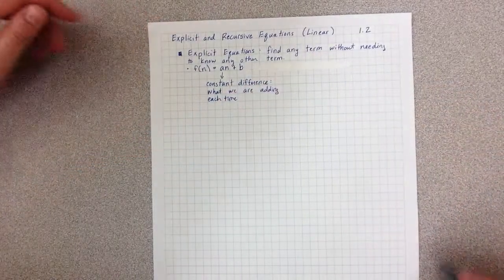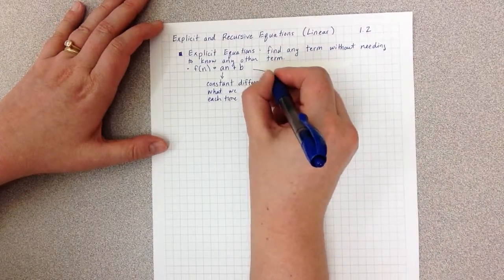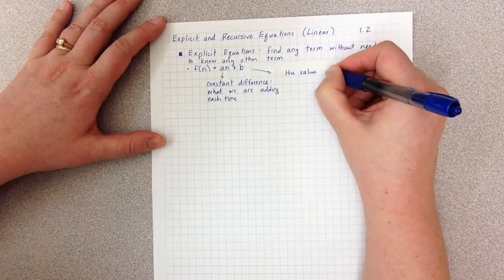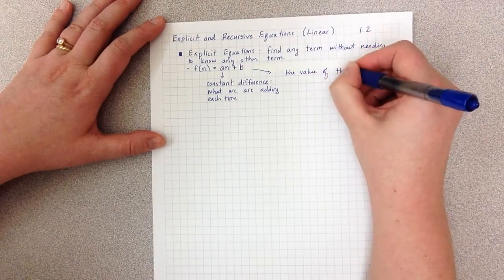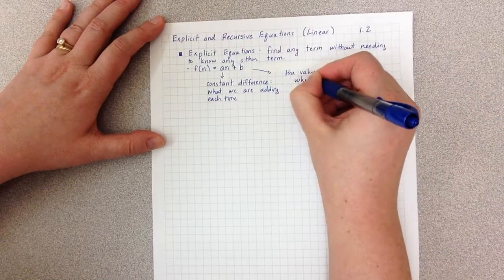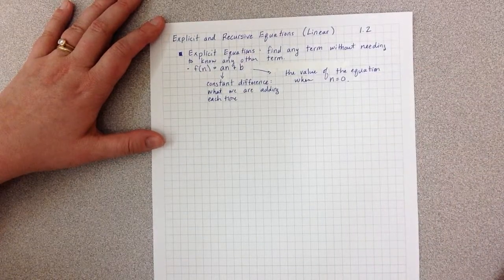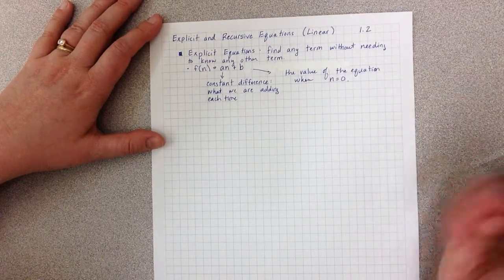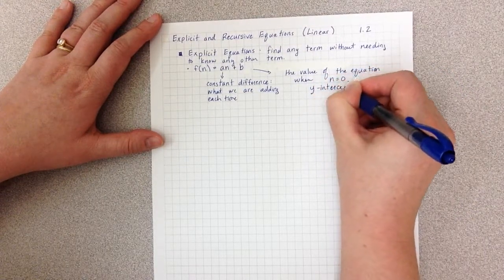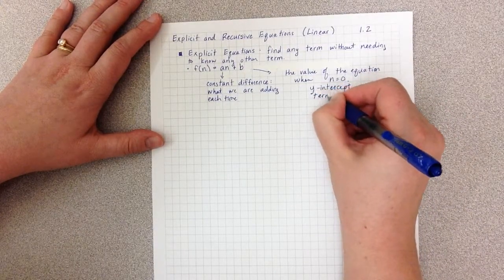Remember, adding over and over and over again is multiplying. And the b represents the value of the equation when n equals 0. So we often talk about this as being the y-intercept, or in this section we often talk about it as being term 0.